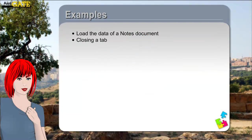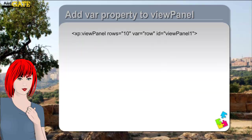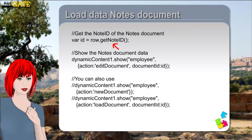Now we know the basics of adding tabs and selecting custom controls, it is time to look at how we can display the data of an employee when the user clicks on a link in the Employees list. Also we show how to remove an active tab. When the list of employees is displayed and the user clicks on one of the links, we want to show the form with the data of the employee. Therefore we need a reference to the selected view entry. This can be achieved by adding the var variable with the value 'row' to the tag. We can access this variable in the OnClick event of the column with the links. First you see how to retrieve the NoteID from the NotesXSB view object. Next we have to load the data from the Notes document — we specify the NoteID in the second argument of the Dynamic Content method 'show', together with the type of action.